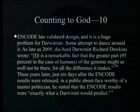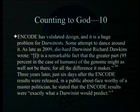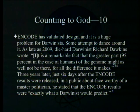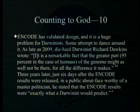As late as 2009, Darwinist Richard Dawkins wrote — and this is in print — that 95% of the genome might as well not be there for all the difference it makes. Three years later, just six days after the ENCODE results were released — and this is on tape — in a public about-face worthy of a master politician, he stated that the ENCODE results were 'exactly what a Darwinist would predict.' Well, maybe some Darwinists — certainly not him.